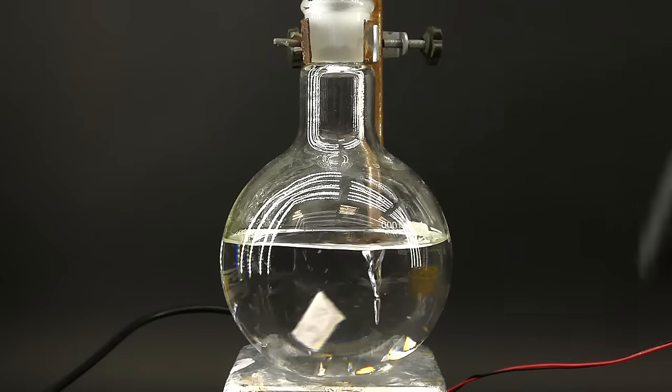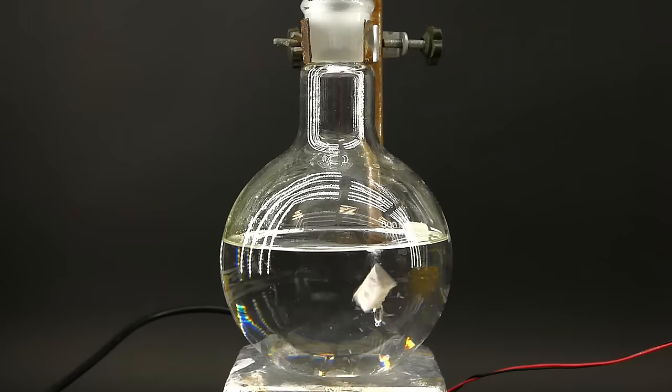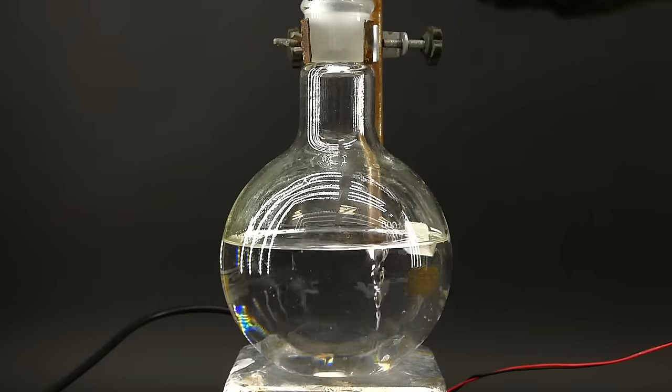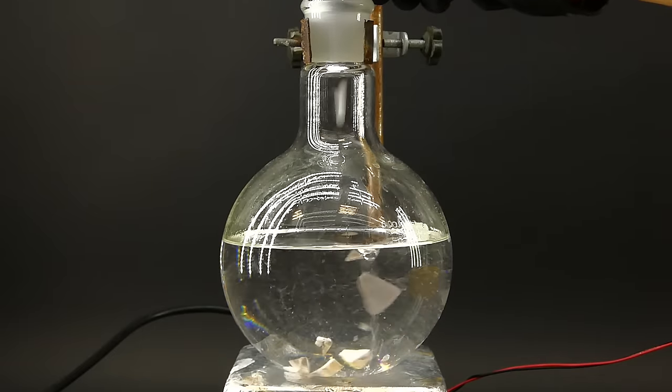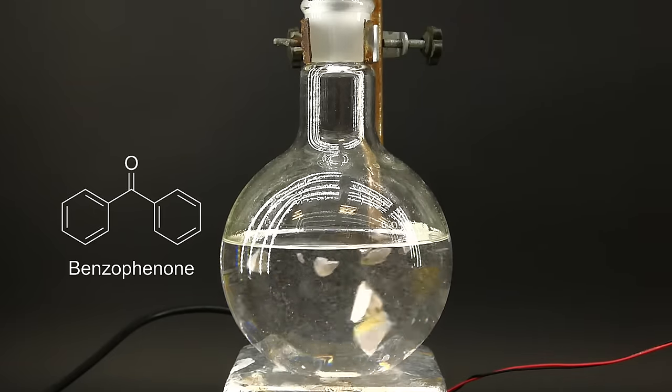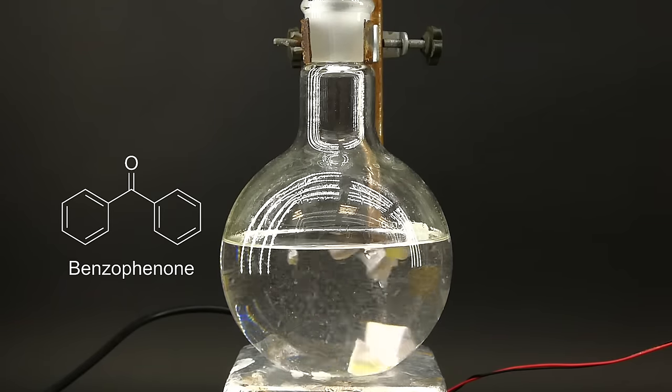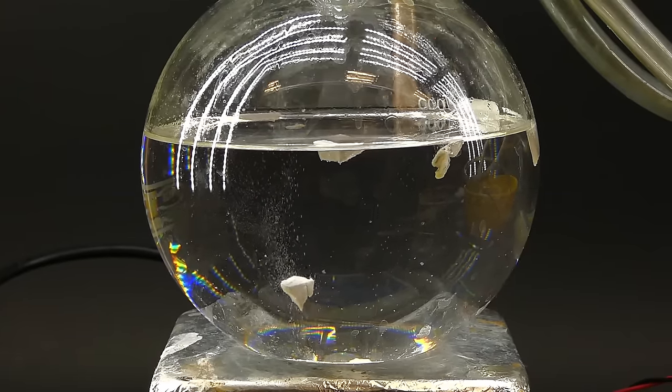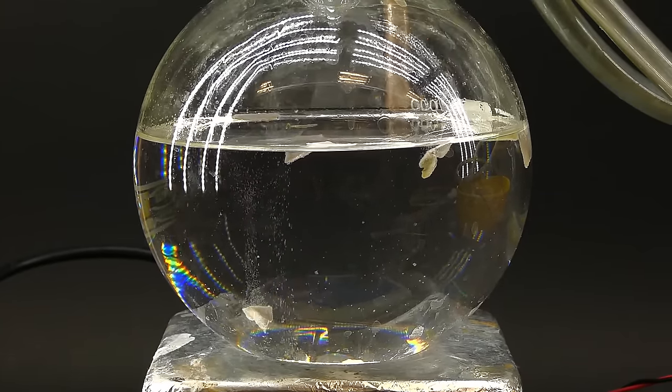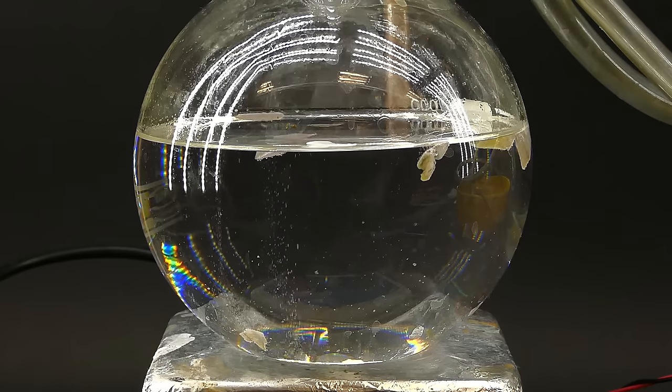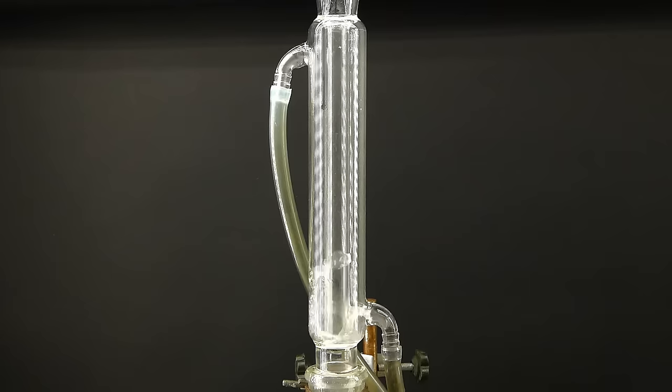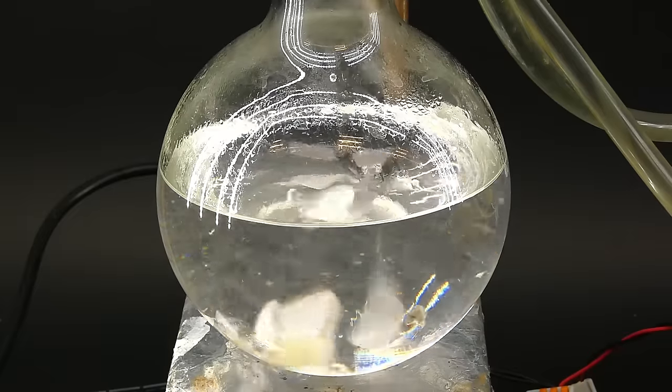To start the purification process, I added them to the dioxane, and as a new indicator of when the dioxane is pure, I added a few crystals of a chemical called benzophenone, which should turn blue when all the impurities are destroyed, indicating the end of the reaction. As you can see, even at room temperature, the sodium reacts with some impurities producing hydrogen gas. To speed this up, I assembled a reflux apparatus and started heating the flask.